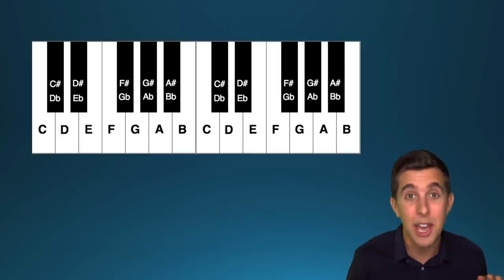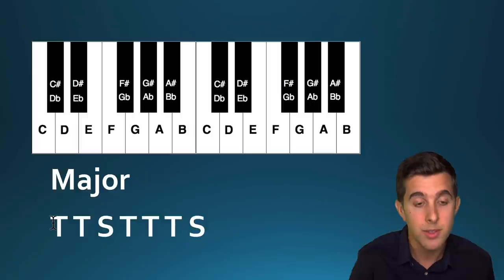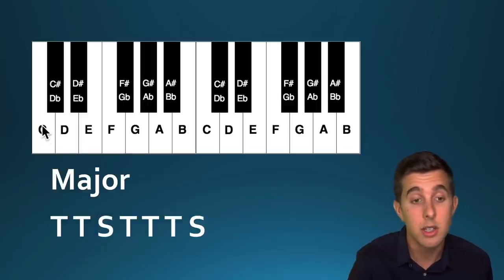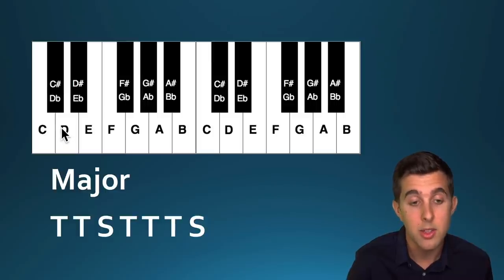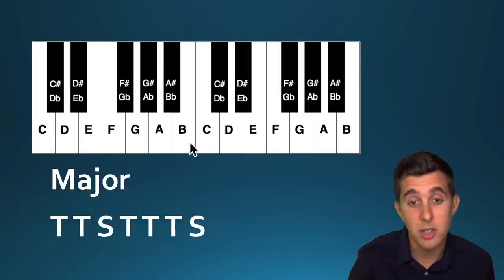Here's the pattern to work out any major scale: T, T, S, T, T, T, S — tone, tone, semitone, tone, tone, tone, semitone. A tone is two notes including the black notes, and a semitone is just one note. Starting on C and going up a tone gets you to D, another tone gets you to E, then a semitone to F, then a tone to G, another tone to A, another tone to B, and finally a semitone back to C. So these are all the white notes, which is a C major scale.